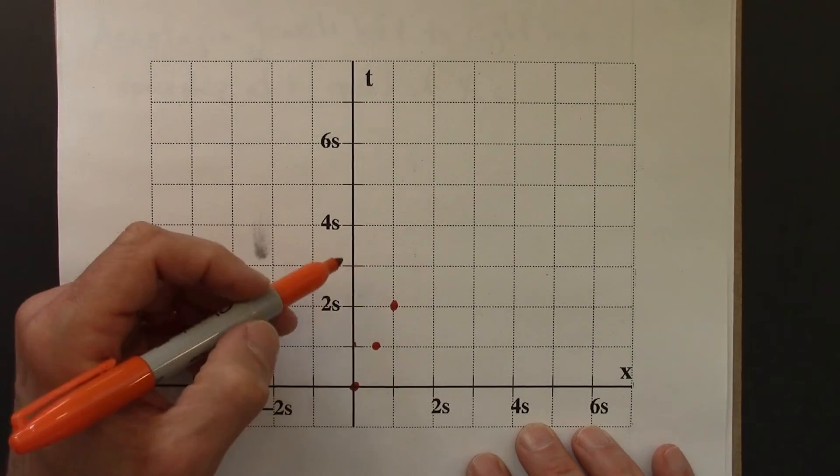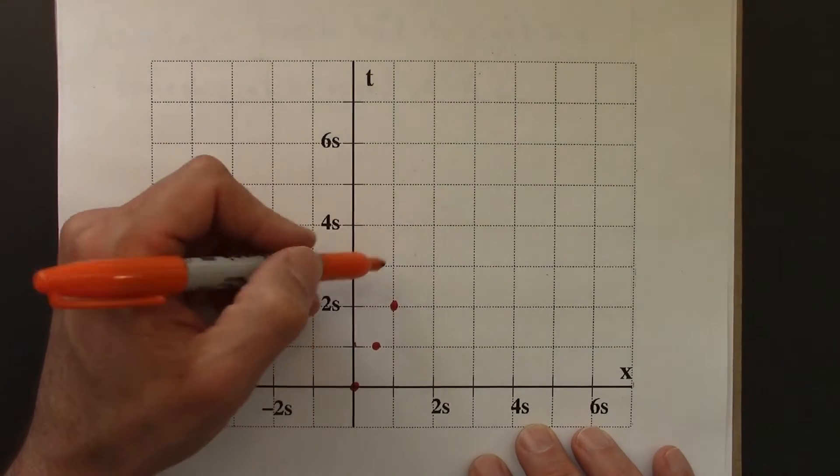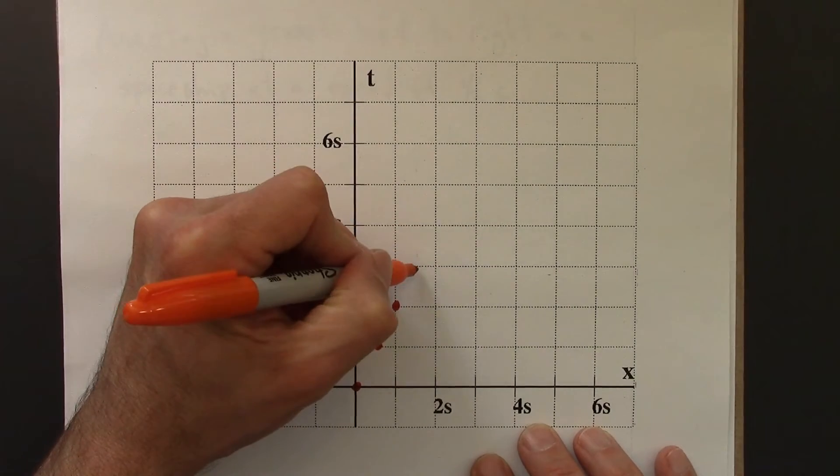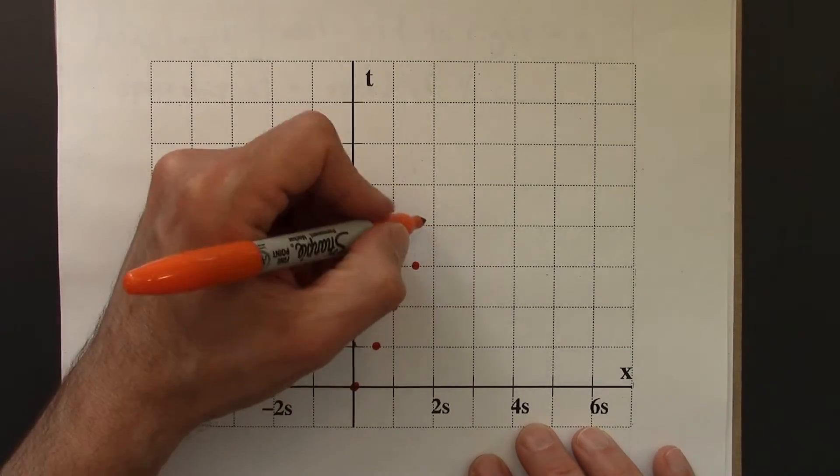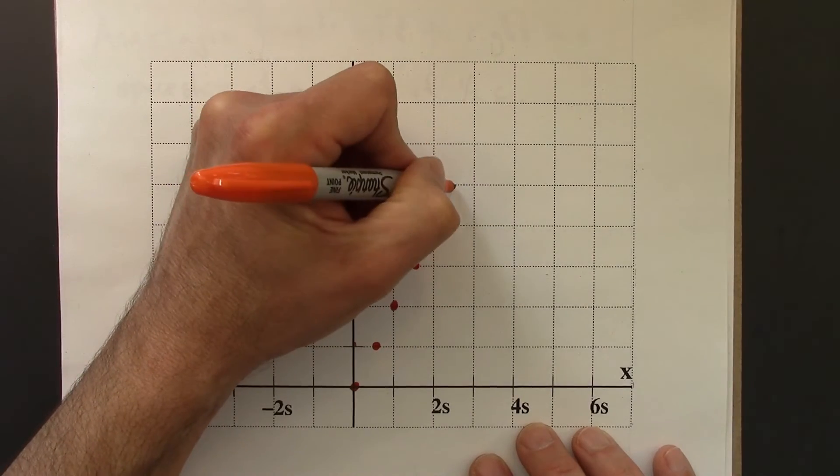And then these dots would continue in a straight line. So after three seconds, another second passes, that's up, and then another second in time, another second in distance, and so on.